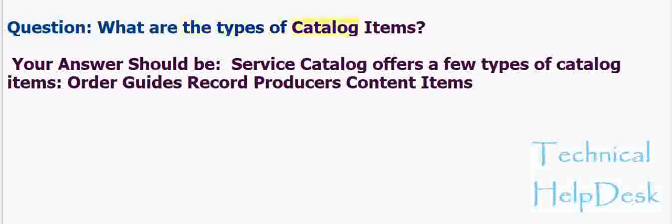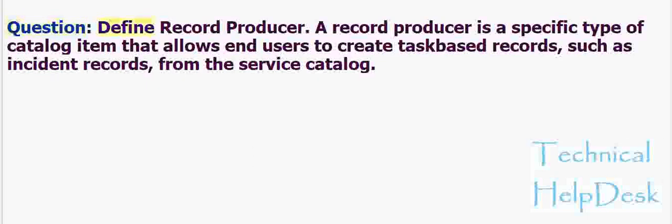What are the types of catalog items? Service catalog offers a few types of catalog items: order guides, record producers, and content items. A record producer is a specific type of catalog item that allows end users to create task-based records, such as incident records, from the service catalog.